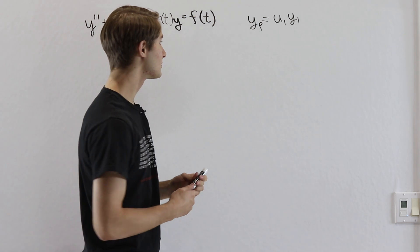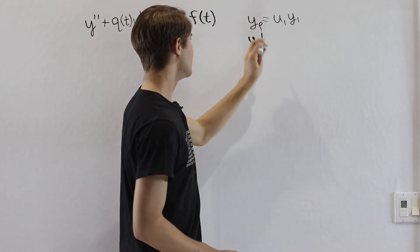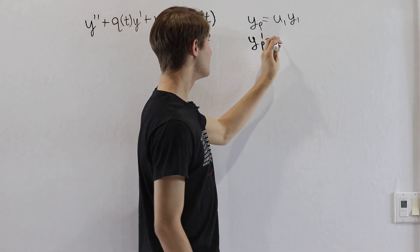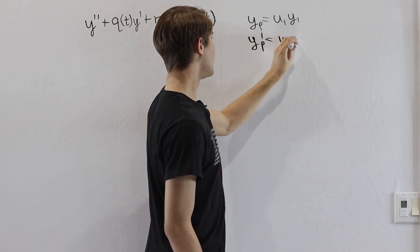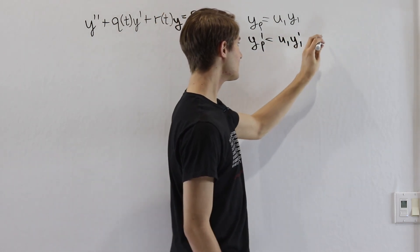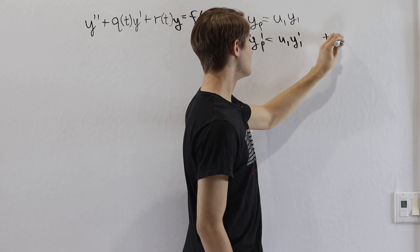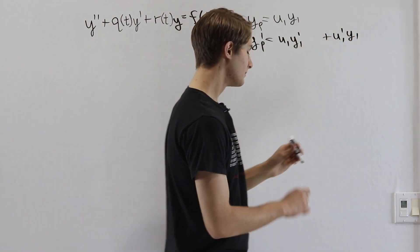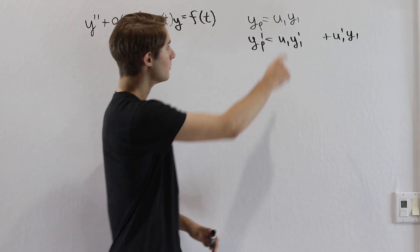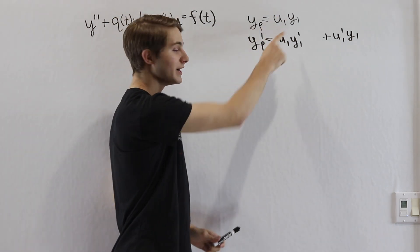The reason we like having this product is because when we differentiate it, yp prime gives us u1y1 prime and then we add u1 prime y1. But what's cool about this is, because of the product rule, one of the terms that we get is u1y1 prime.